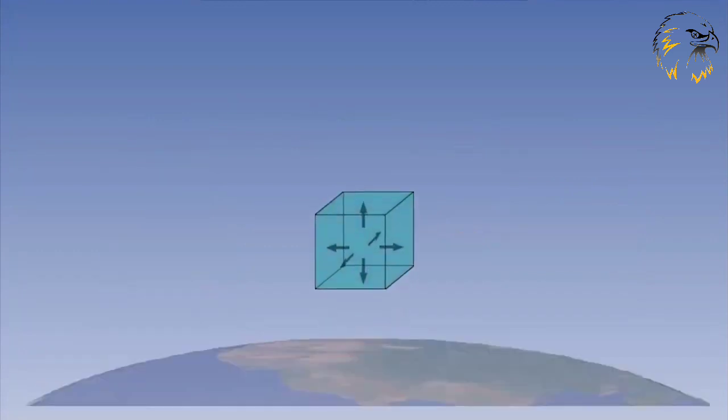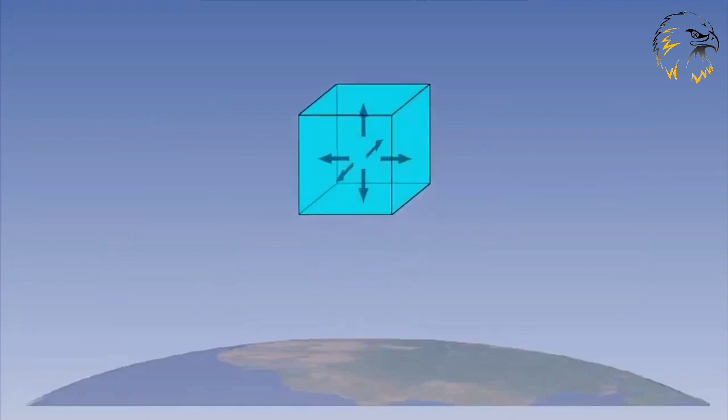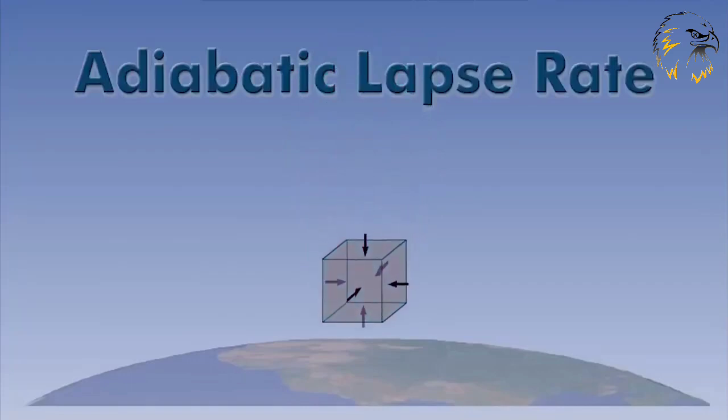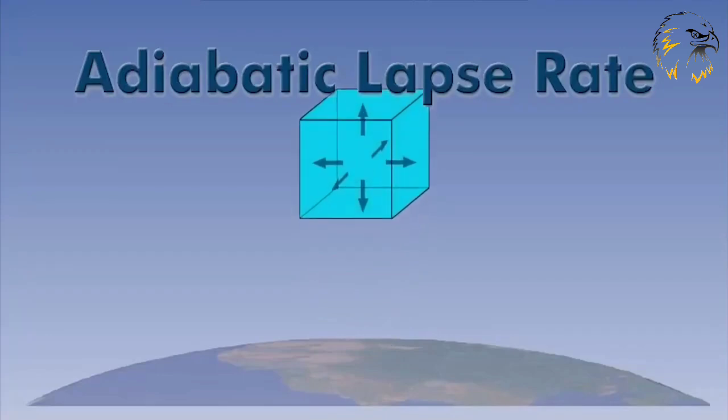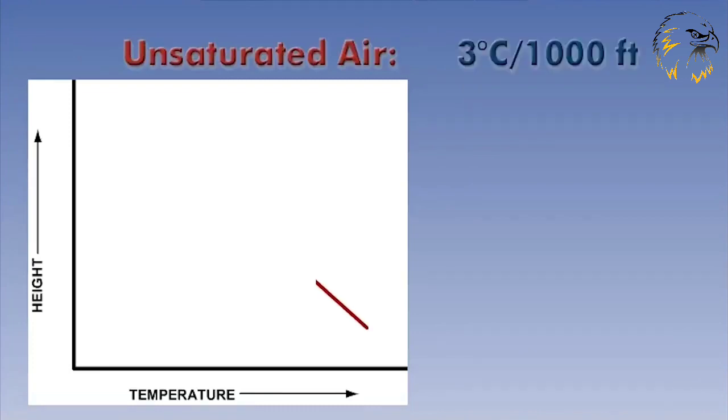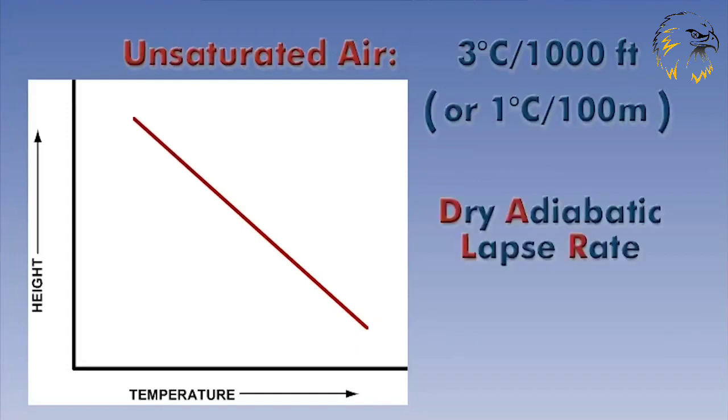The rate at which air cools or warms, as it is forced to rise or fall, depends upon the moisture content of the parcel of air. This is called the adiabatic lapse rate. If we first consider air that is dry, or unsaturated, then the maximum rate at which the temperature falls is 3 degrees Celsius per 1000 feet of ascent, or 1 degree Celsius per 100 meters. This is called the dry adiabatic lapse rate, or DALR for short.